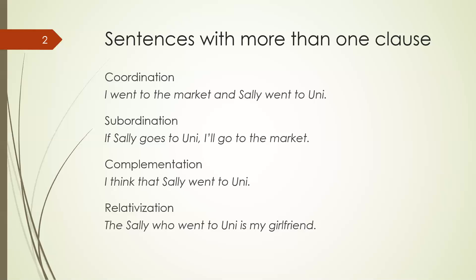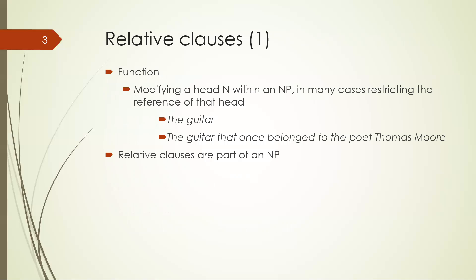Here, 'who went to uni' is a relative clause that modifies Sally. The basic sentence is 'Sally is my girlfriend' — these sentences are made up for illustration. Sally is my girlfriend is the overall sentence; 'who went to uni' is a relative clause that modifies Sally. The function of relative clauses is to modify a head noun within a noun phrase.